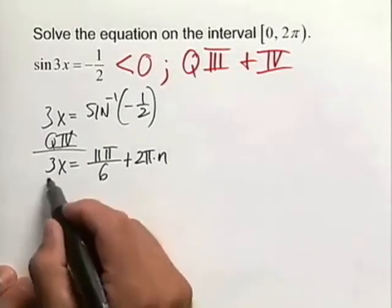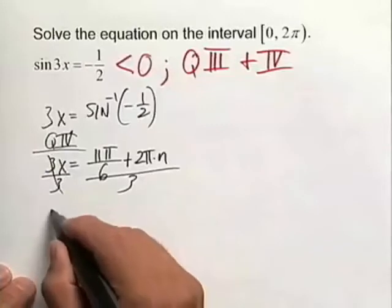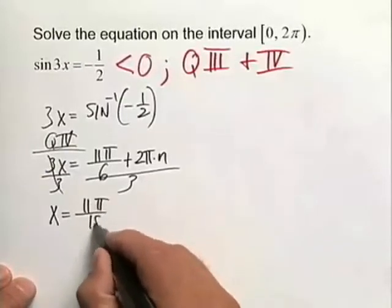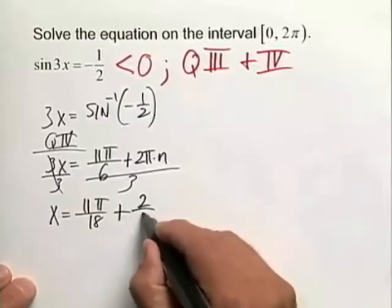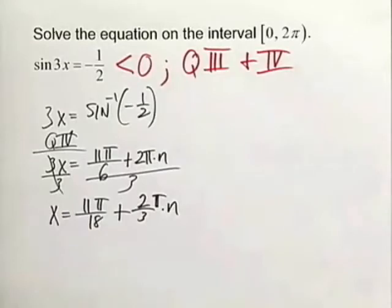More on that later. Let's solve for x completely. We're going to divide both sides by 3 here. And from this, we end up with x is equal to 11π/18ths, and then that's plus 2/3 π times n, where n is any integer that we can think of here.